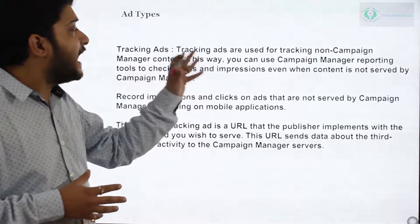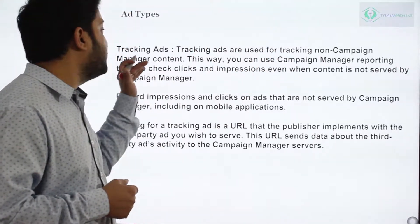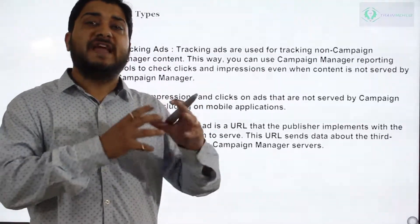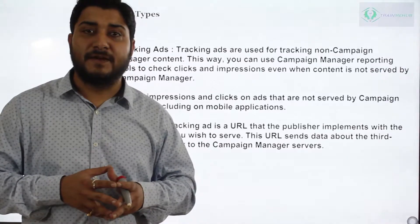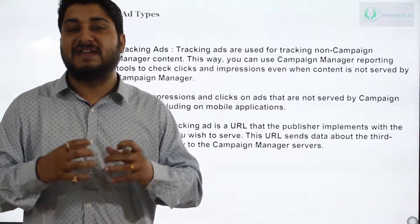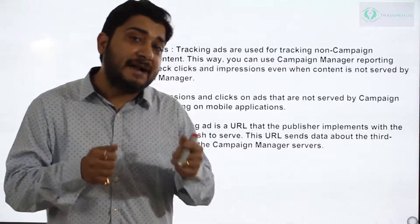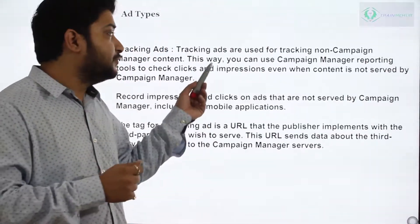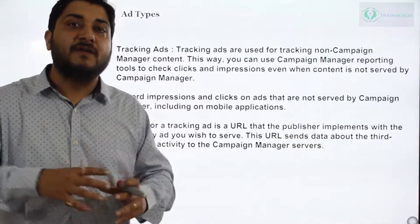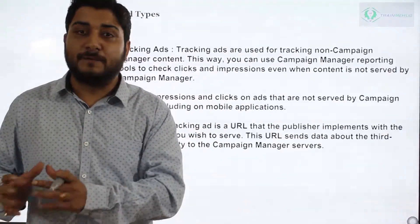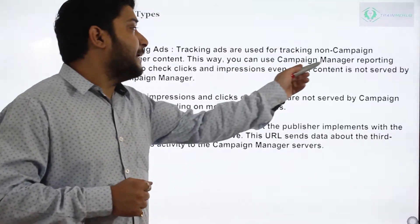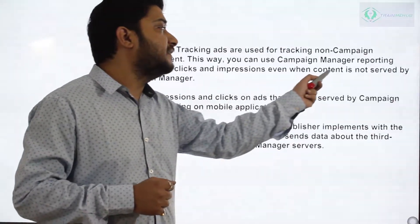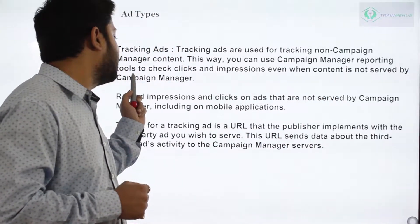Tracking ads. Tracking ads are used for tracking non-campaign manager content. For example, if you are using any third-party ad server but you want to record the numbers in DoubleClick, in that particular case you have to use this tracking ad type to record the impressions and clicks within DoubleClick. This way you can use Campaign Manager reporting tools to check clicks and impressions even when the content is not served by Campaign Manager.